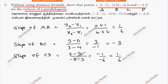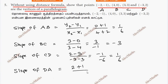Next, the slope of DA. That is 2 plus 1 divided by minus 3 plus 2, which totals 3 by minus 1, which is minus 3.